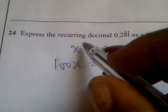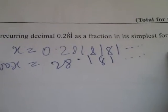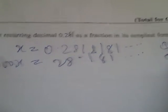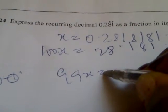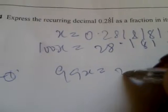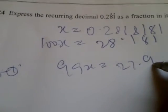so this minus this will give you, let's call this equation 1 and equation 2. So equation 2 minus equation 1 will give you 99x equal to, this minus this should give you 27.9. Okay,